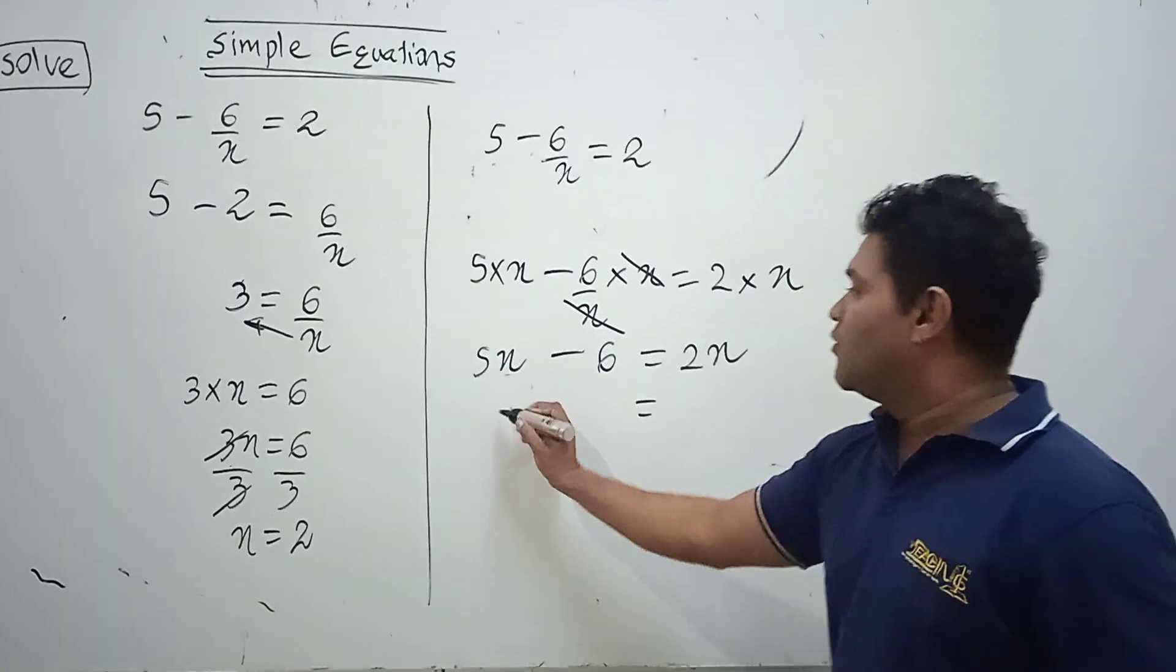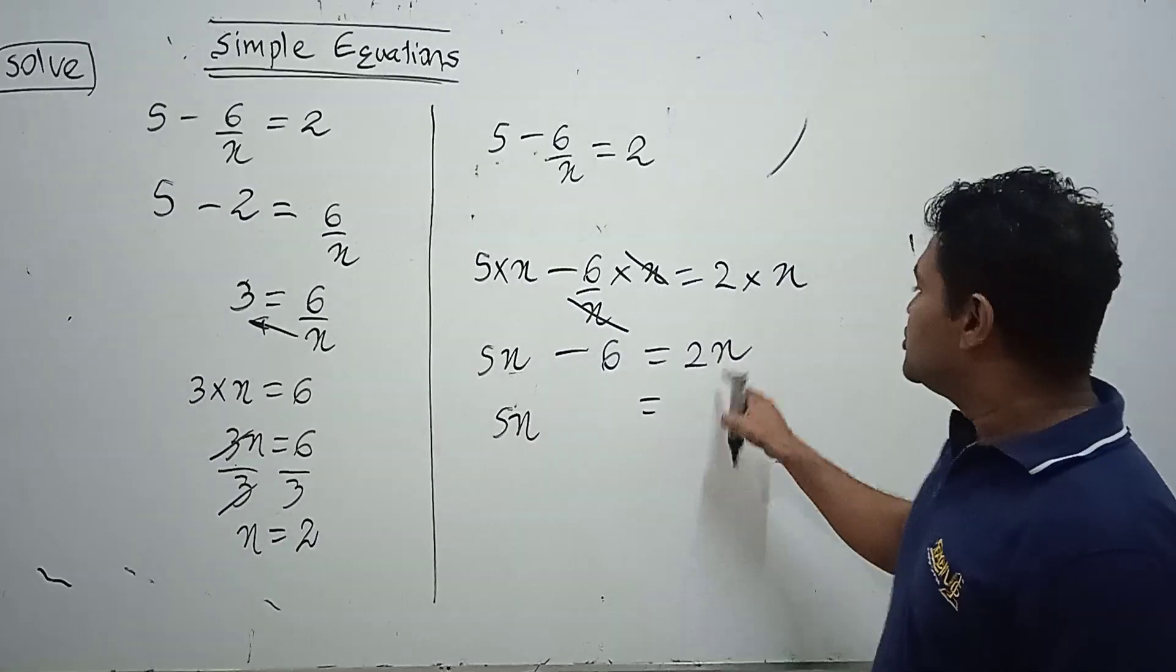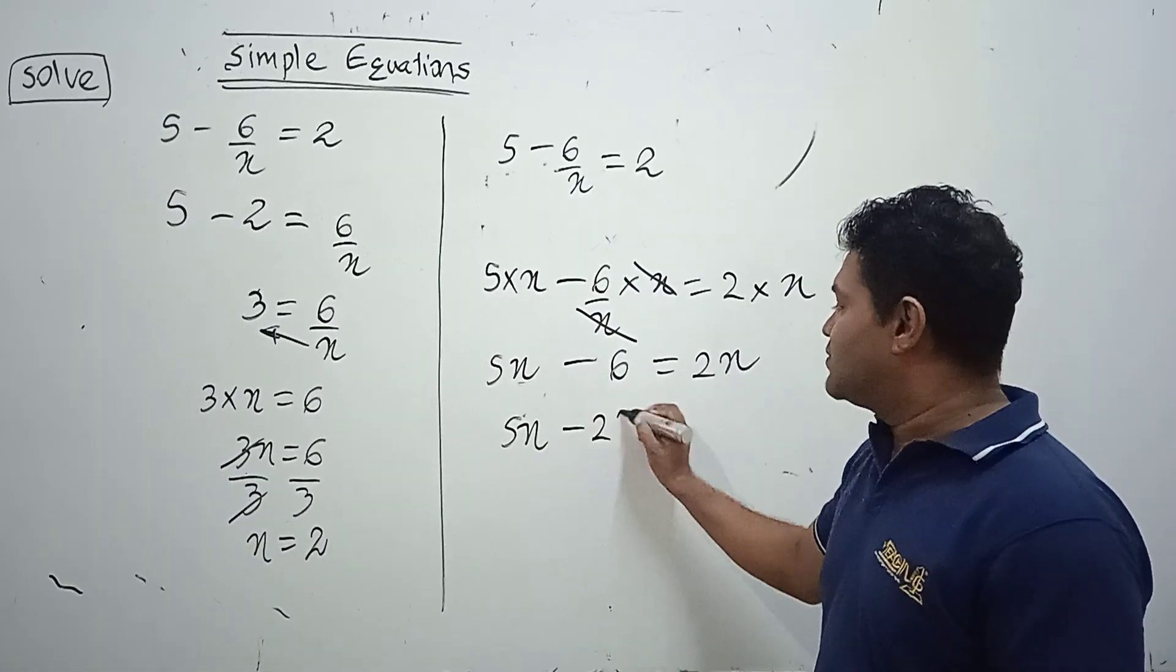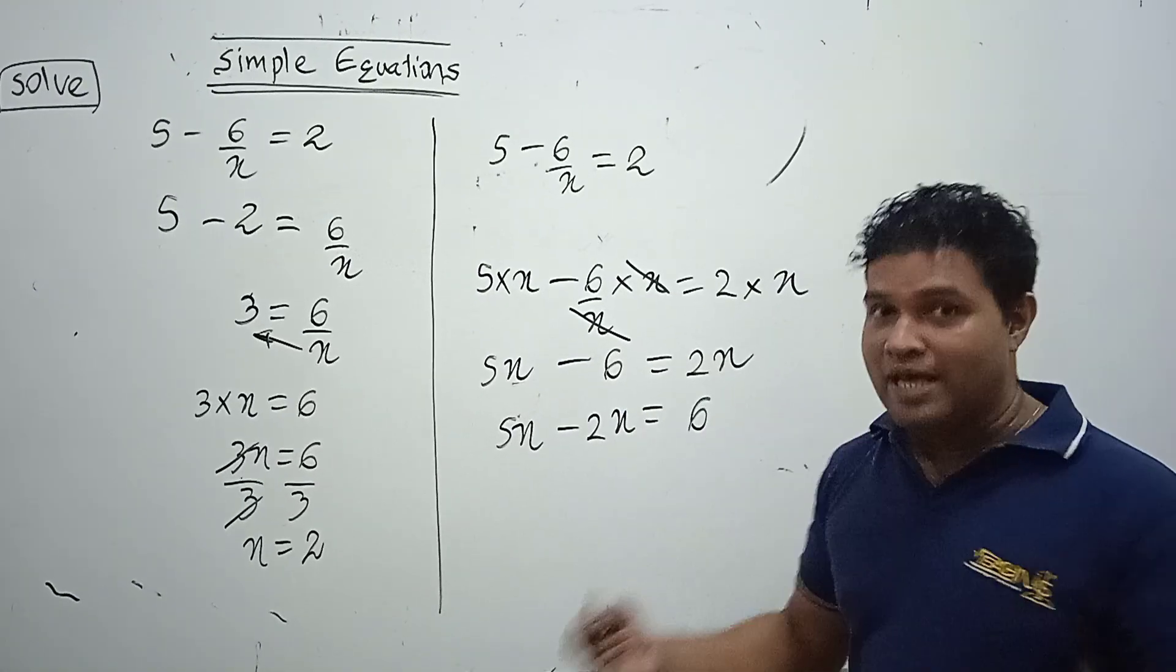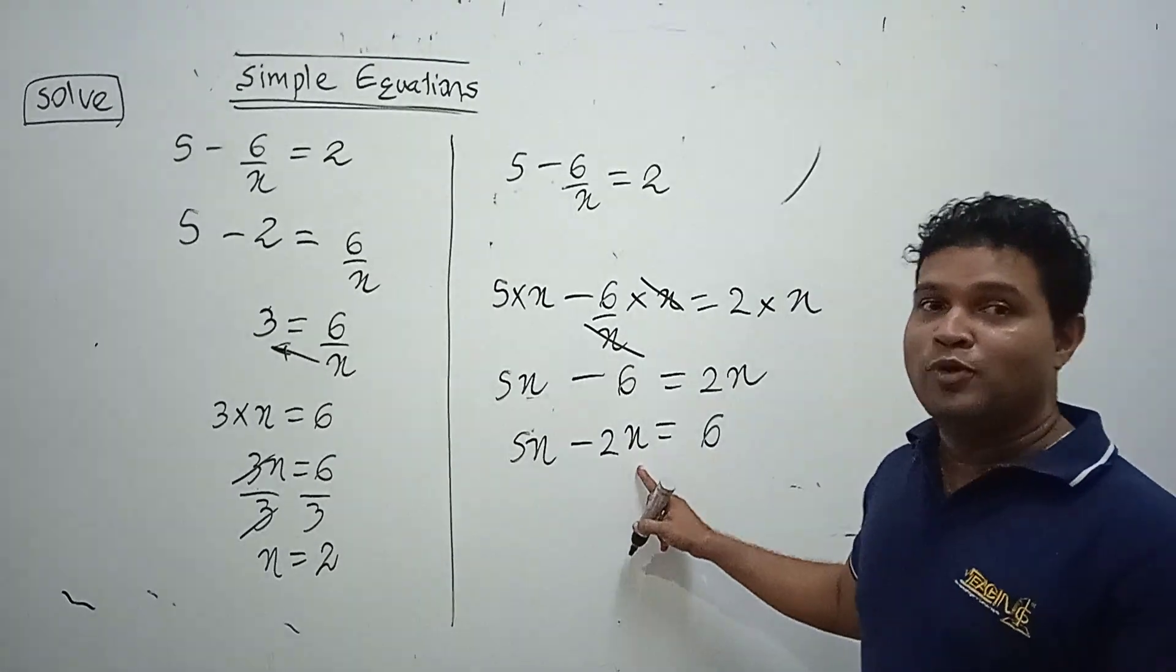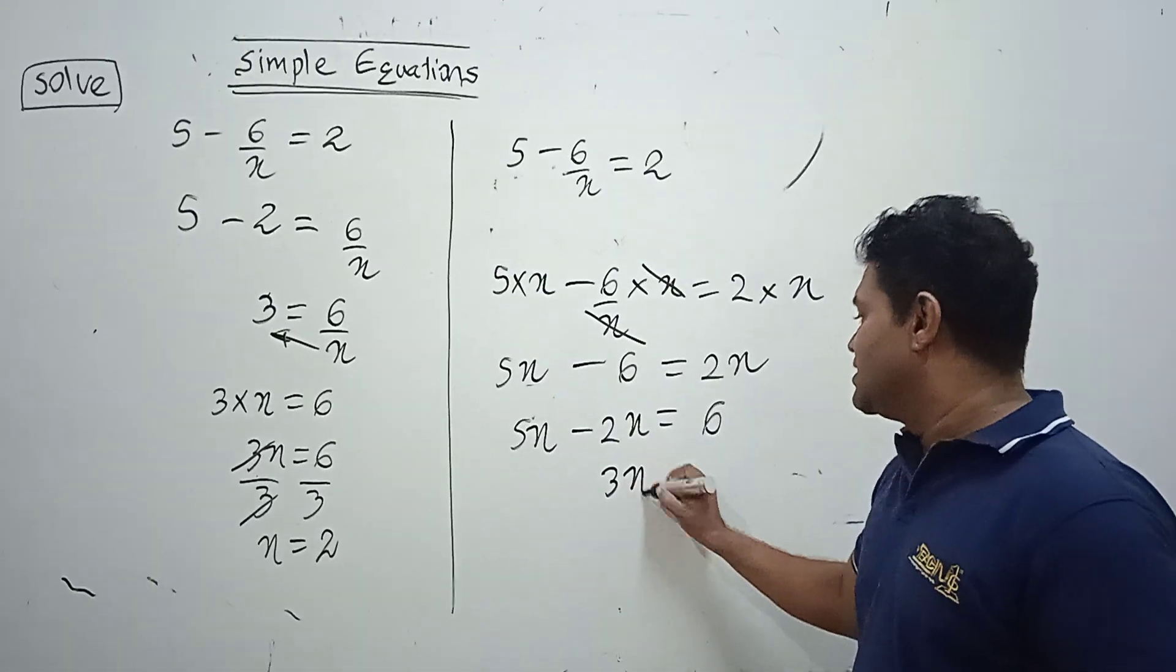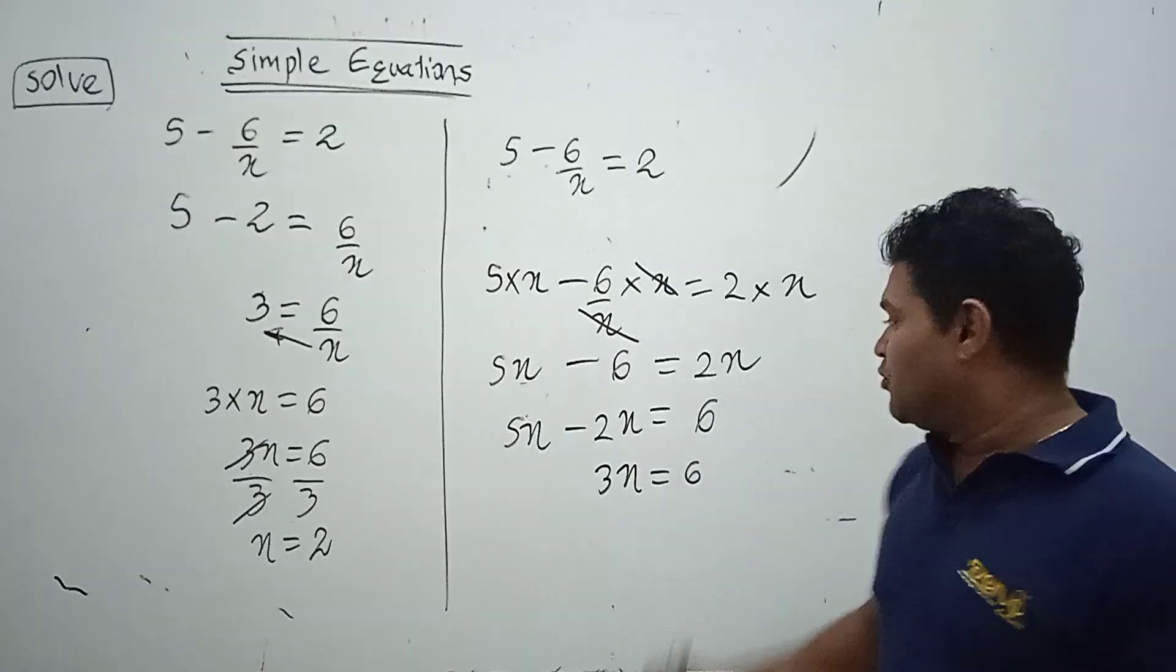We can now arrange algebraic in one side, numericals in other side. Therefore, 5x is there, 2x we can write left side as minus 2x, minus 6 we can write as plus 6. Then what is 2x from 5x? 3x equals 6. Then to find the x, we have to divide both sides by 3.